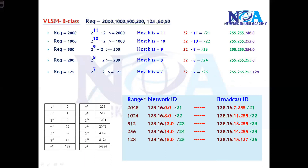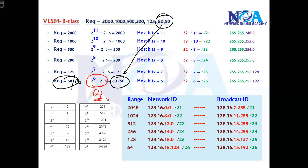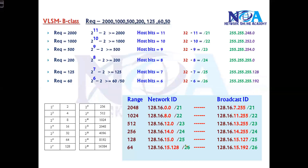The next two requirements — 60 and 50 — automatically fall into the same possible size of 64. The host bits are 6, and 32 minus 6 gives 26 network bits. The subnet mask is 255.255.255.192. The range for the first one starts at 15.128 and ends at 15.191, which is a group of 64 addresses.